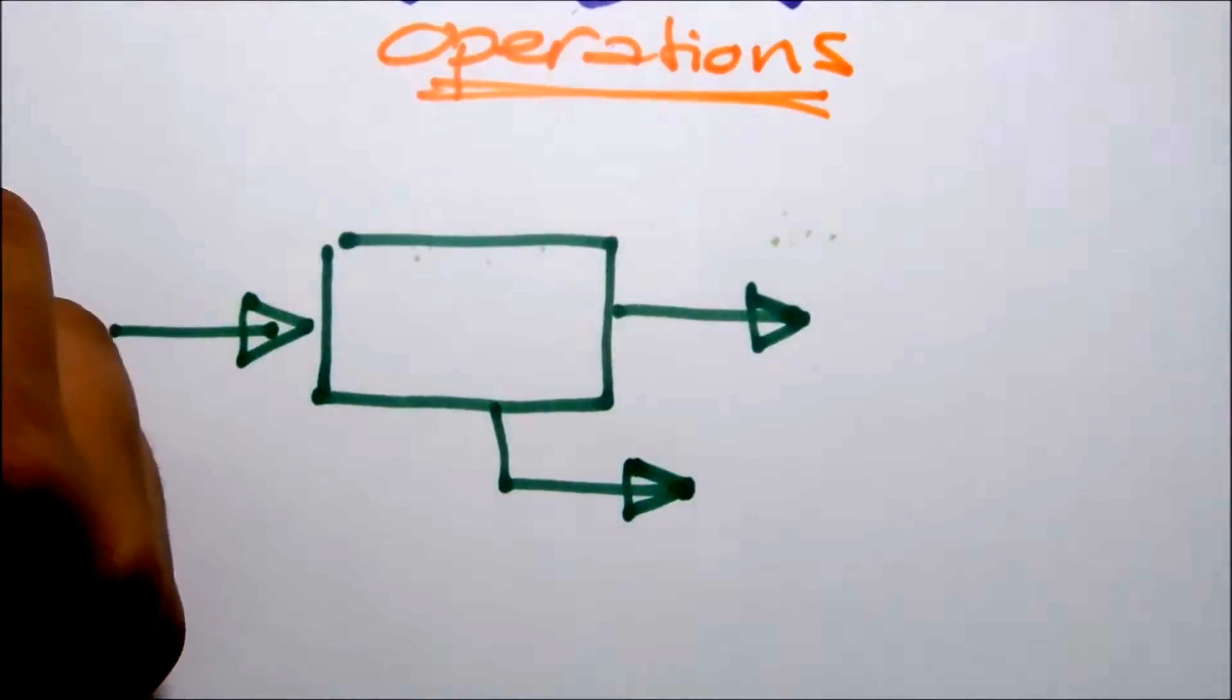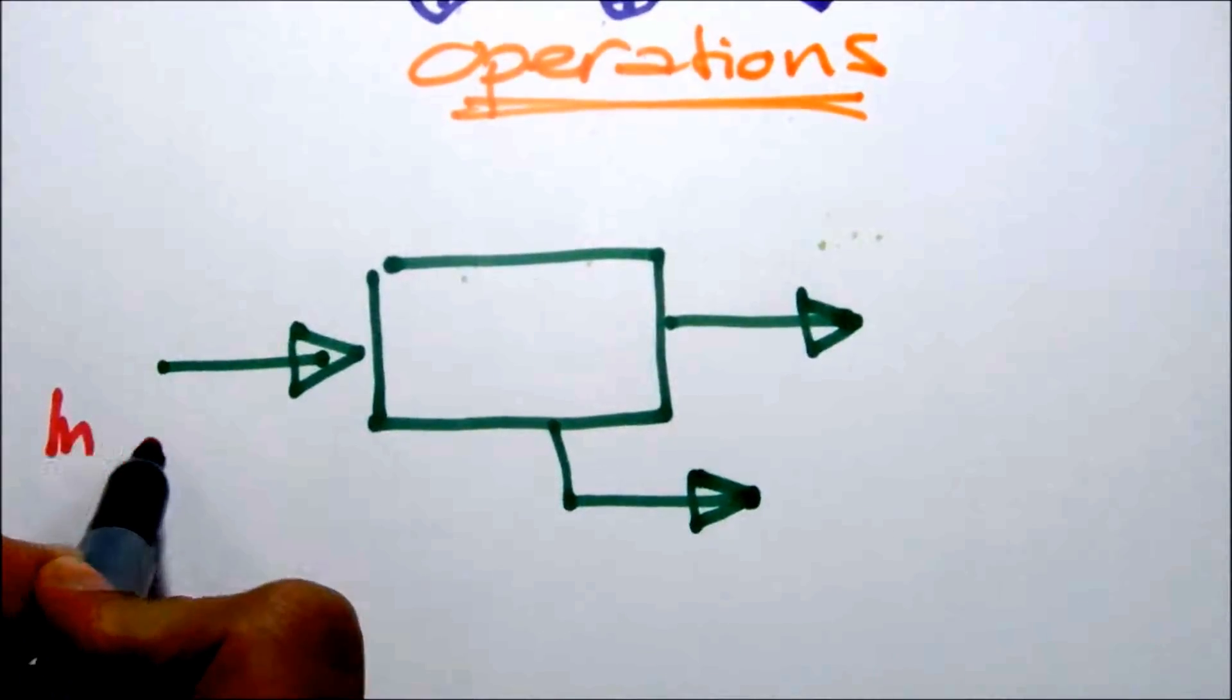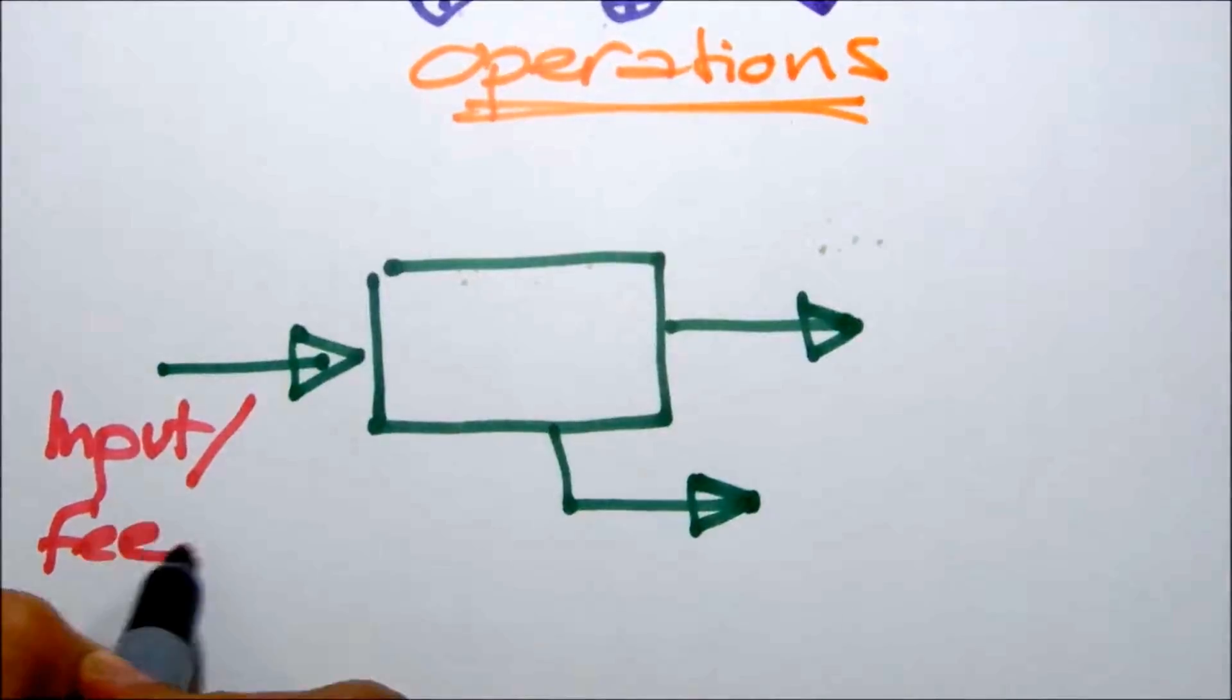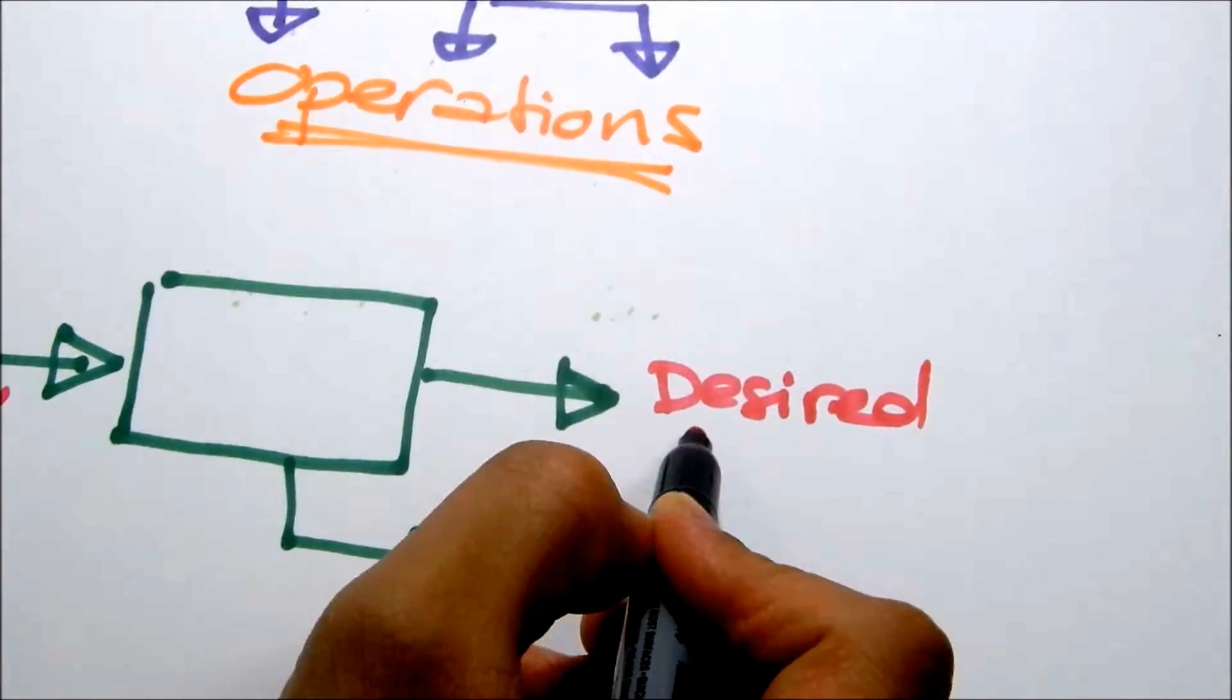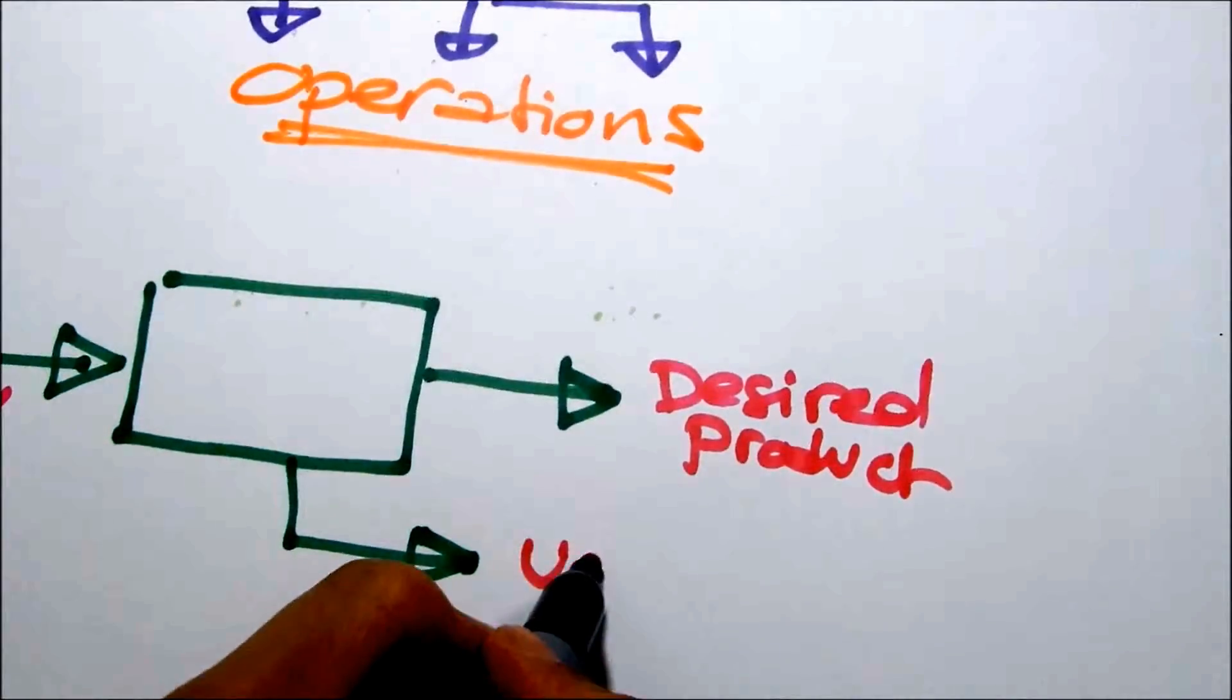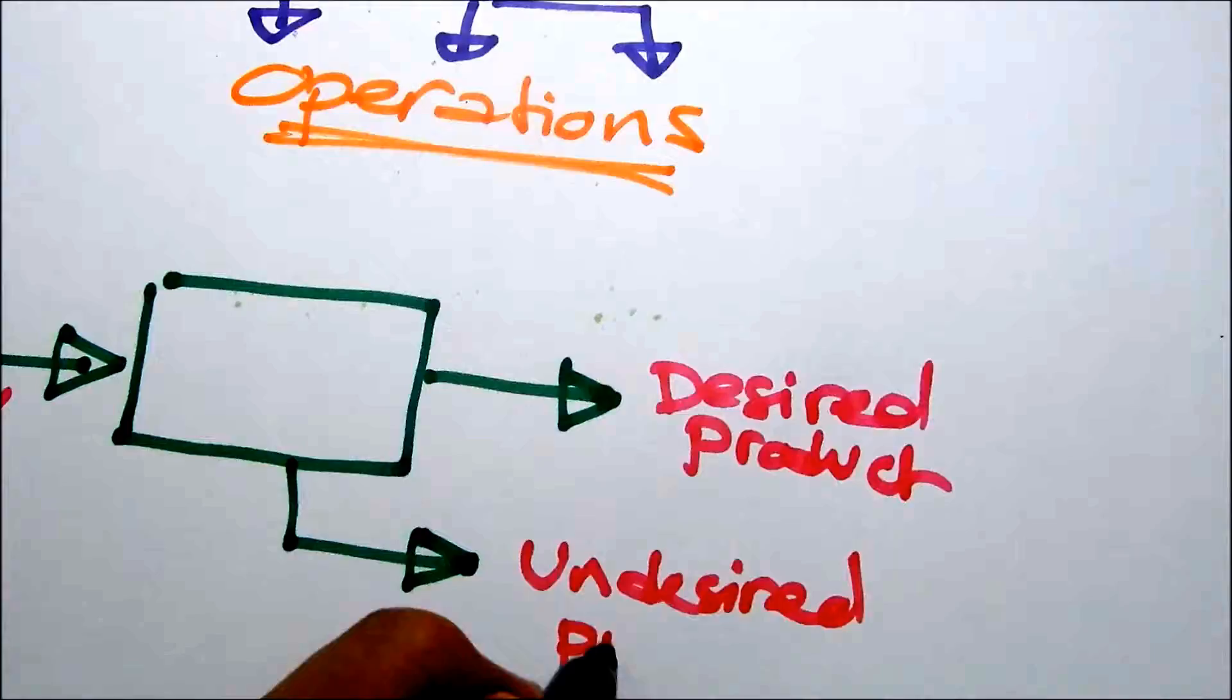We have inputs and outputs. The box is a unit, let's say, or multiple even units. So, what is going in is the input or feed. We have the desired product and we have the undesired product.